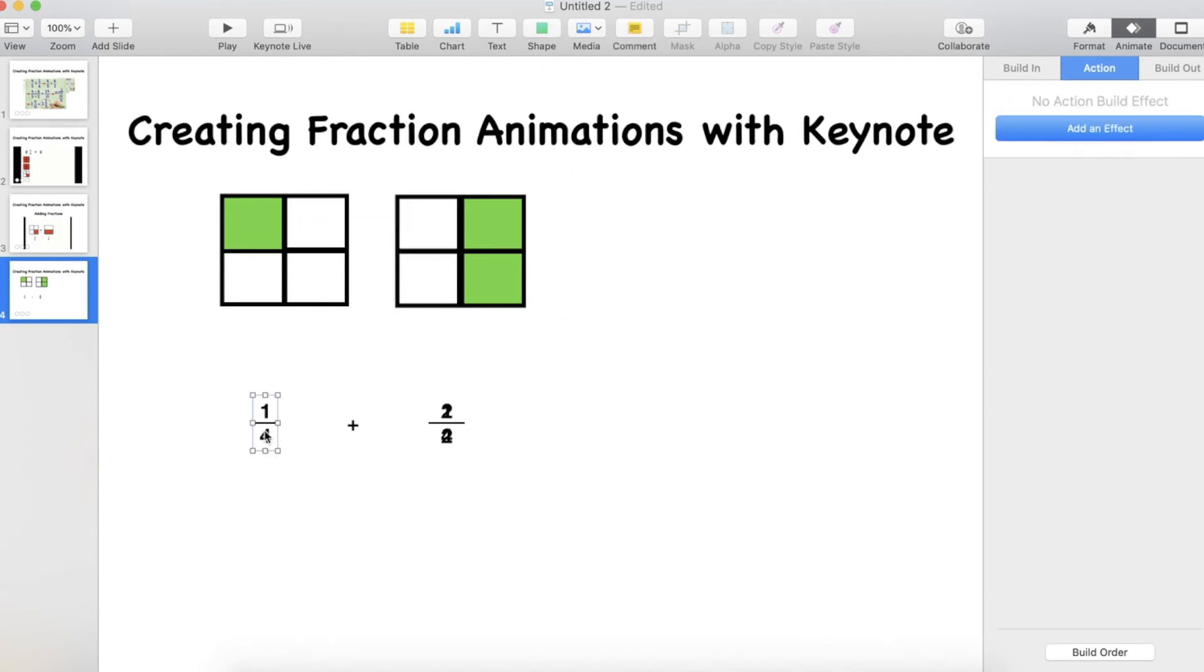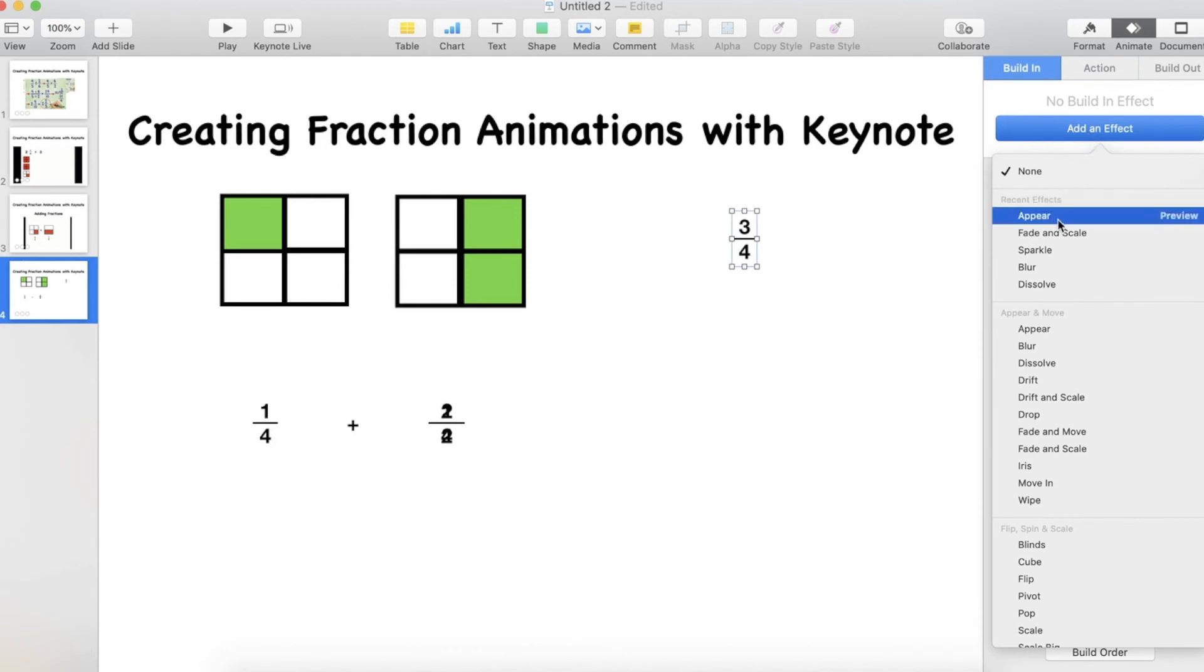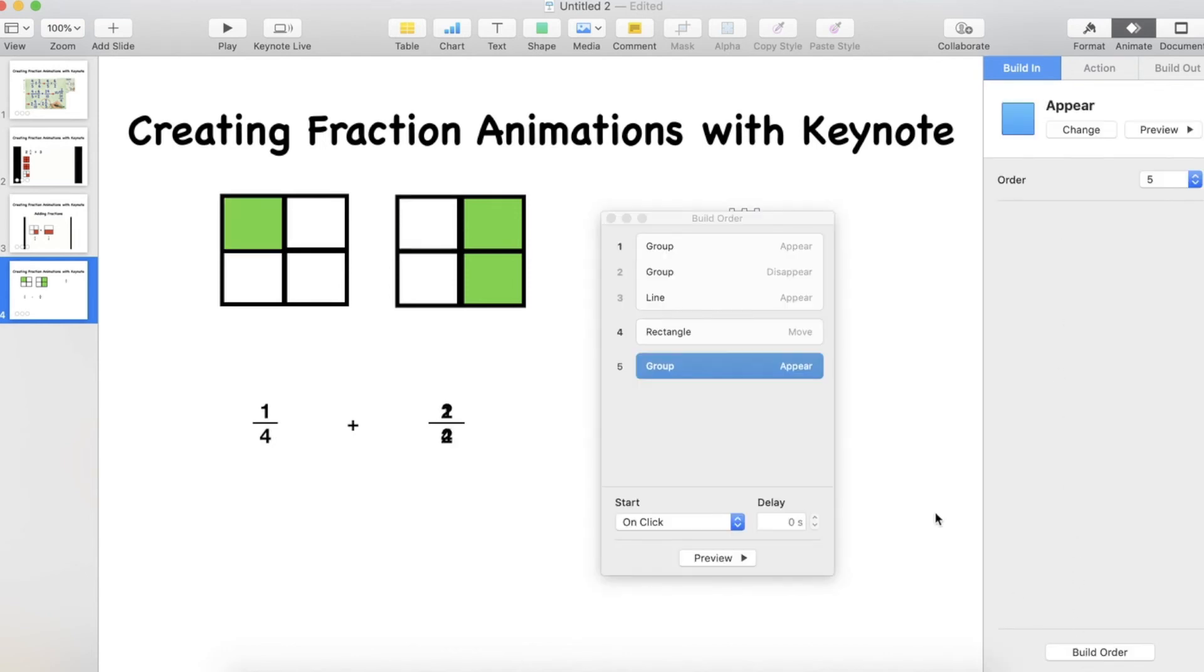I'll just copy this one and paste my answer over here and change that to 3 quarters. And I'm going to add an action now to this one of a build in and make it appear. So when we look at the build order we can now see that we've got a group appears which is the fraction, the group disappears which is the other fraction, the line appears, then our rectangle moves, and then our group appears. Now I want this one to go with build 4 so these two things are going to happen together.